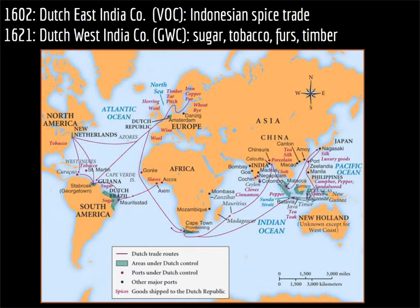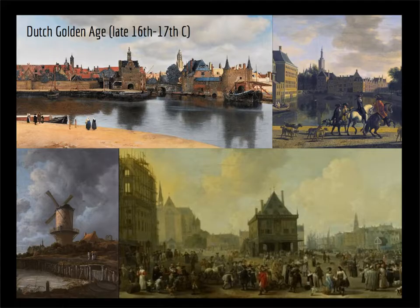In 1621, the Dutch West India Company, the GWC, was founded to take advantage of Atlantic trade. These two companies, as well as the success of the Amsterdam Public Bank, increased the wealth of all of the citizens in the Dutch Republic. The Republic expanded its domestic productive capabilities as well, using dikes and canals to reclaim arable land for agriculture and commercial livestock production, and using windmill power to produce linen and delft china. The Republic dramatically increased its population, and by 1650 it numbered about 2 million people and was one of Europe's most densely populated states.